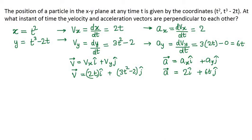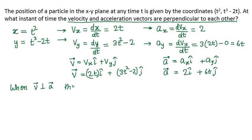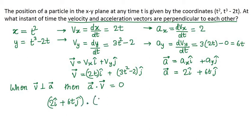Now, the question asks at what instant of time the velocity and acceleration vectors are perpendicular to each other. When these two vectors are perpendicular to each other, their dot product will be 0. So the dot product between a and v must be equal to 0. Let us perform the dot product: (2î + 6t ĵ) · (2t î + (3t² - 2) ĵ) must be equal to 0.